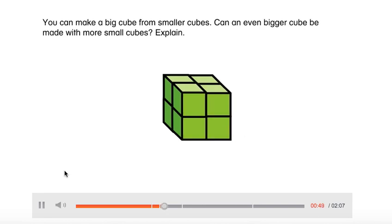You can make a big cube from smaller cubes. Can an even bigger cube be made with more small cubes? Explain.